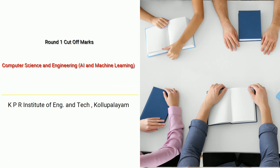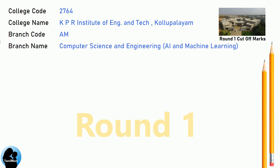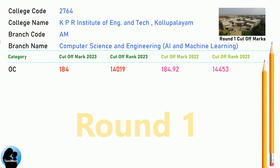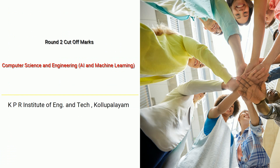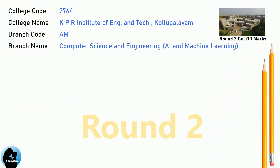DNA Round 1 Cut-off for KPR Institute of Engineering and Technology in Computer Science and Engineering, AI and Machine Learning. DNA Round 2 Cut-off for KPR Institute of Engineering and Technology in Computer Science and Engineering, Artificial Intelligence and Data Science.